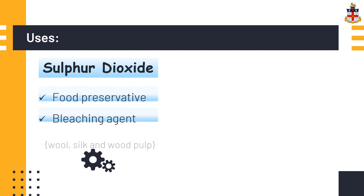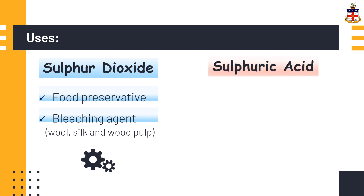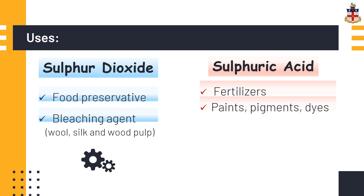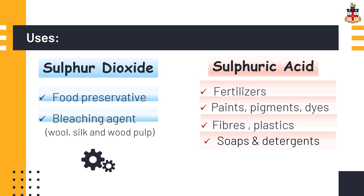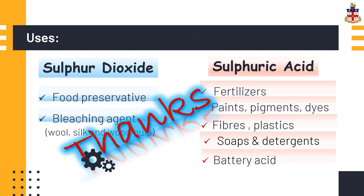Sulfur dioxide formed in stage 1 of the contact process is used as a food preservative and bleaching agent for wool, silk, and wood pulp. Sulfuric acid is also known as the king of chemicals due to its vast variety of uses. Its main uses are in making fertilizers, paints, pigments, dyes, fibers, plastics, soaps, detergents, and also as battery acid.